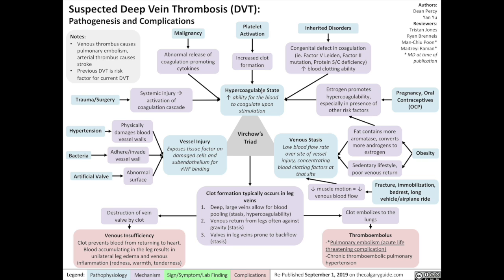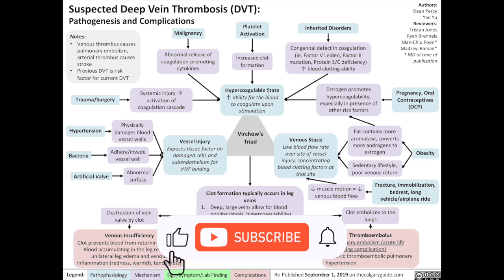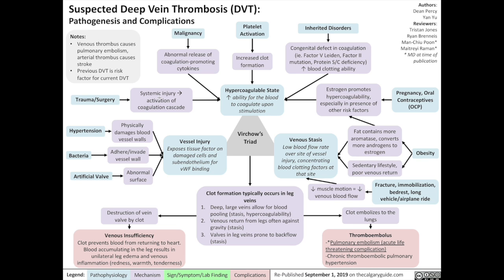The second factor is a hypercoagulable state, defined as an increased ability for the blood to coagulate or clot upon stimulation. Many factors can lead to a hypercoagulable state, including trauma or surgery, which is a form of systemic injury to the blood vessels, activating the coagulation cascade.